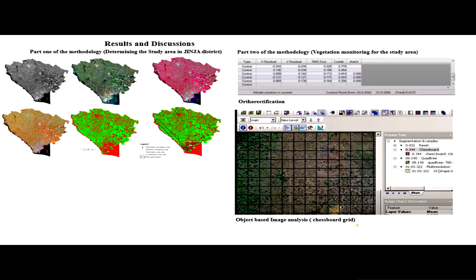This is the chessboard grid, an idea of object-based image analysis. I'm trying to make sure every grid cell has one theme, maybe forest or bare land, but of course it's not possible. We shall see the impact of it not being possible.